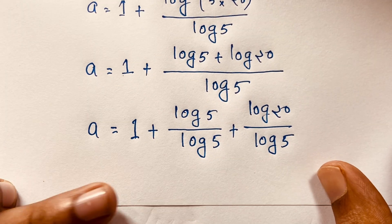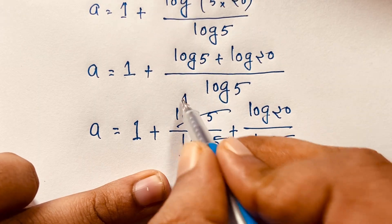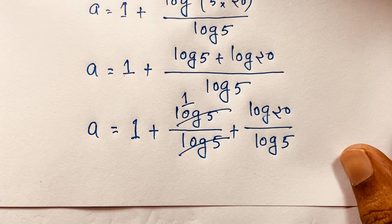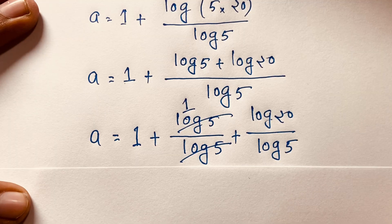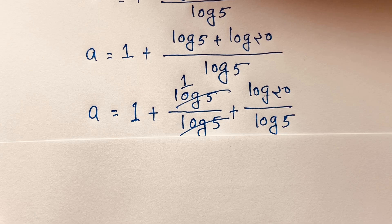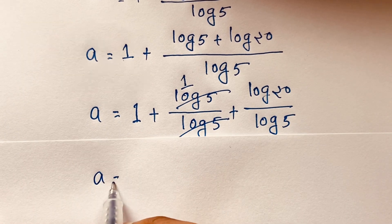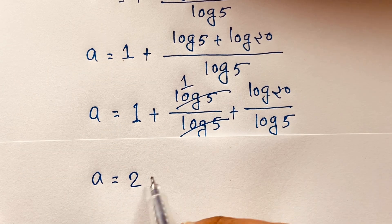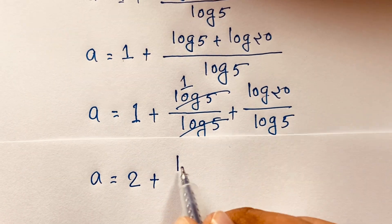The log 5 over log 5 cancels out to 1, so this fraction equals 1. So we get 1 plus 1, which is 2, giving us a is equal to 2 plus log 20 over log 5.